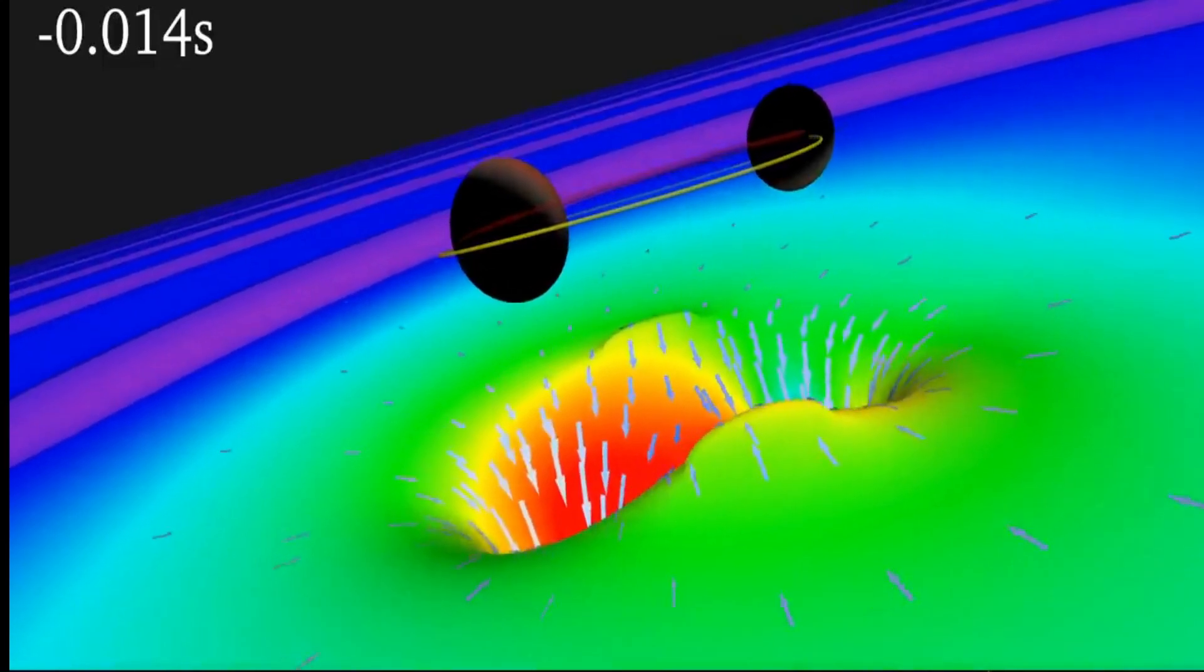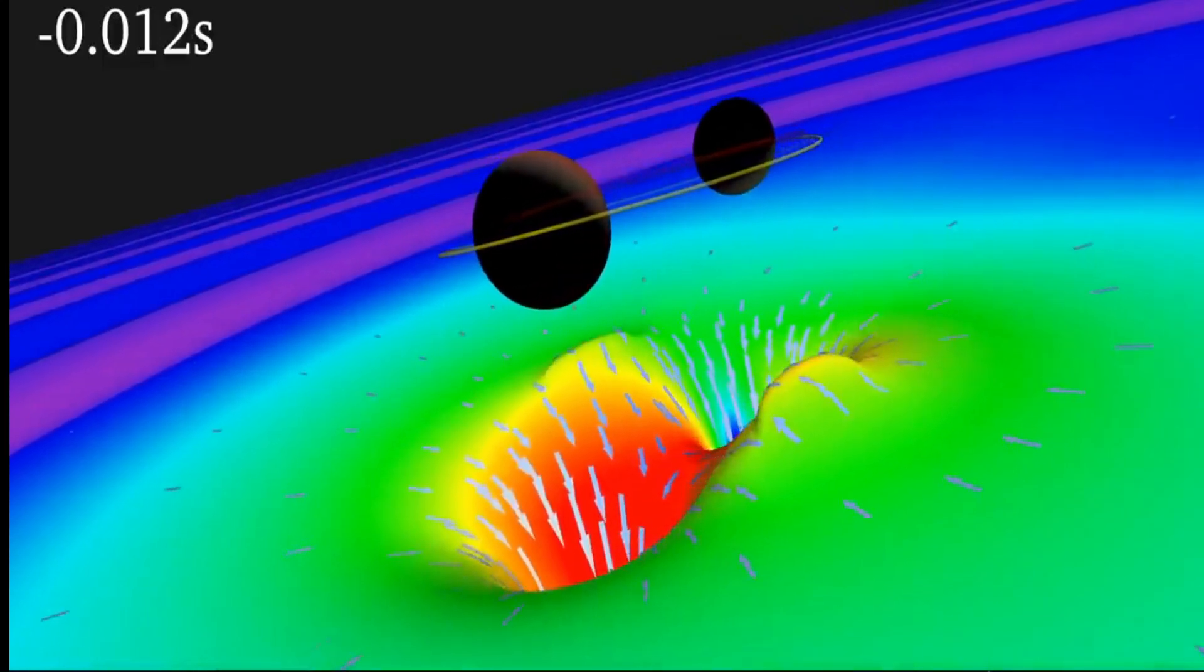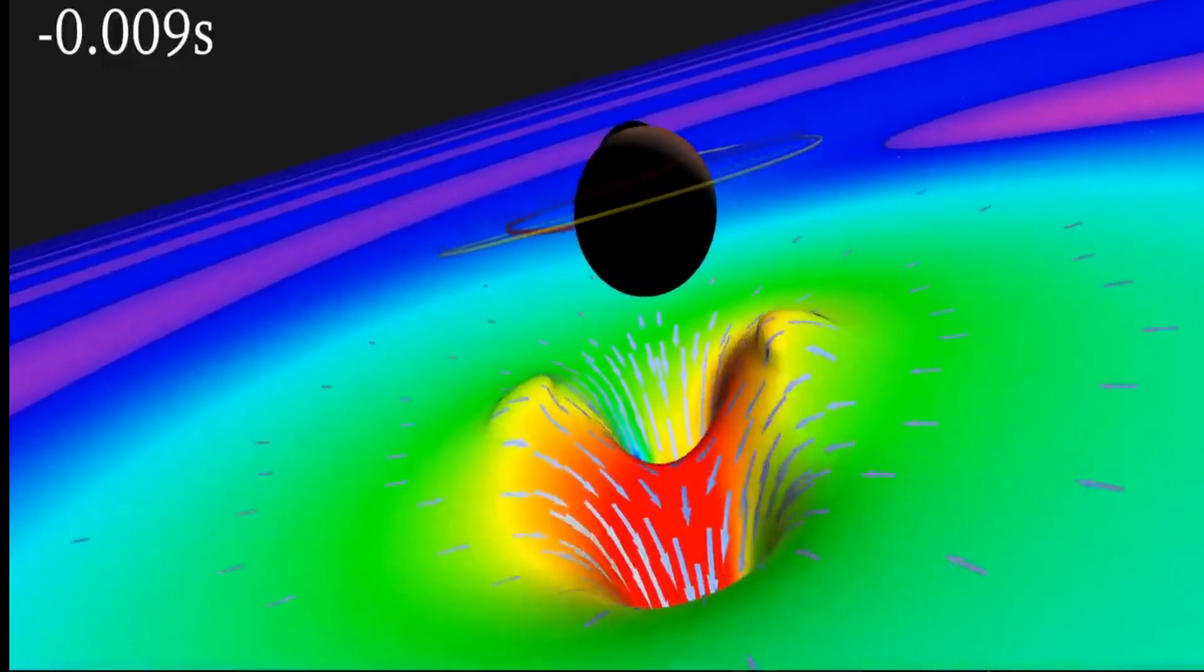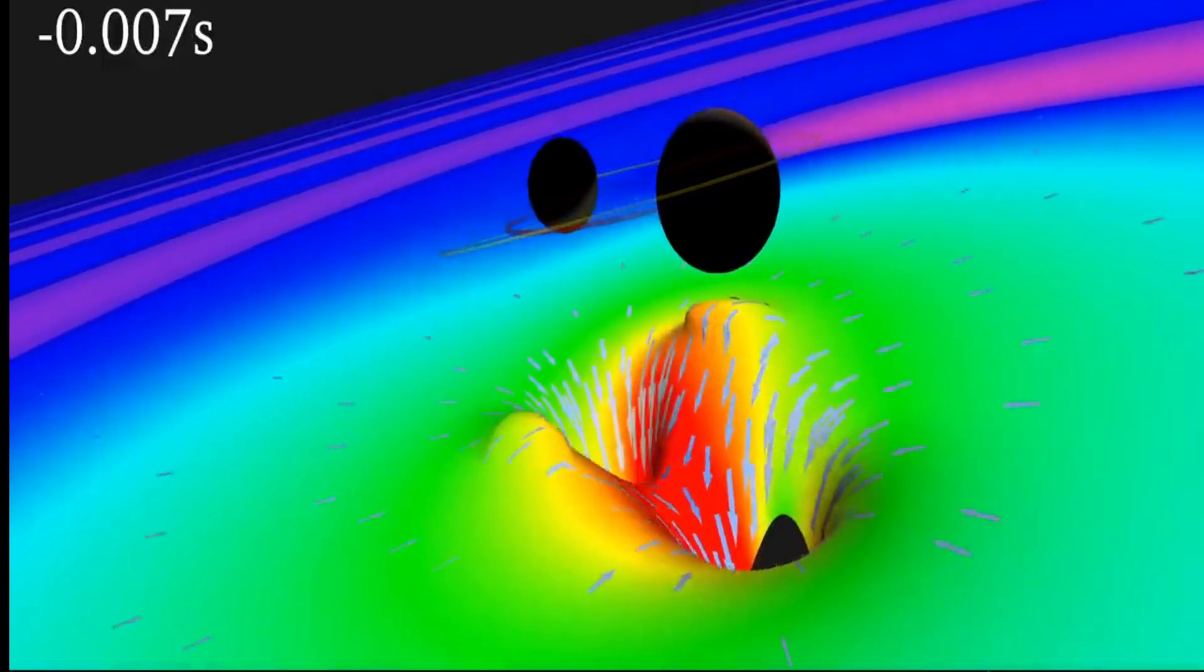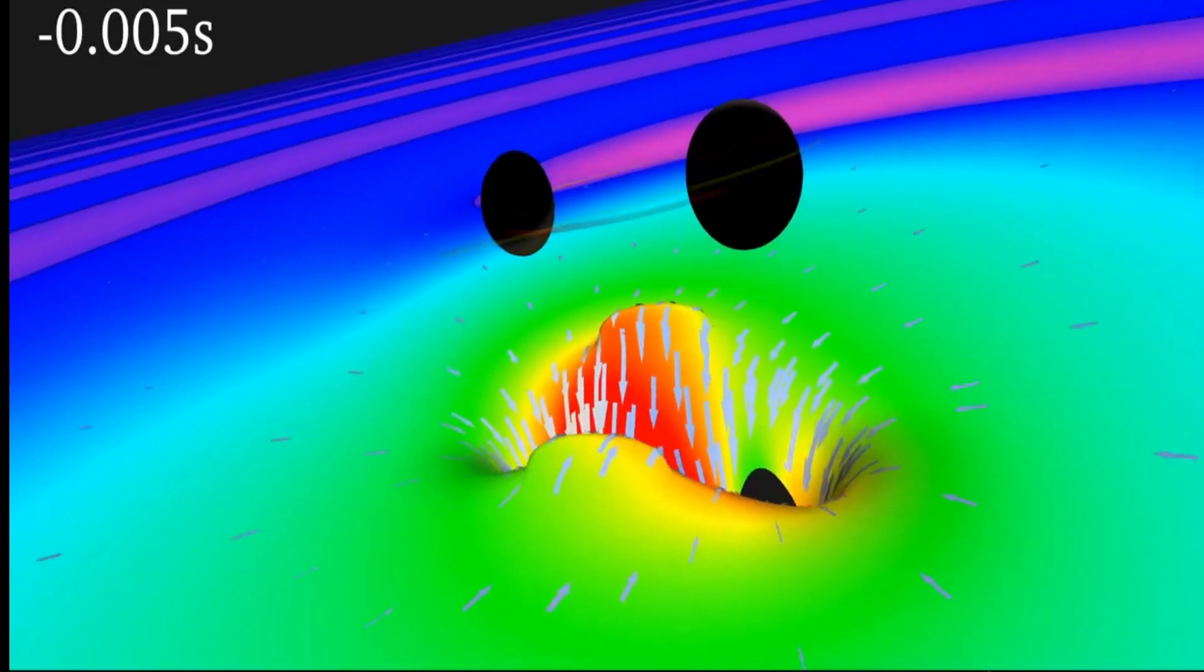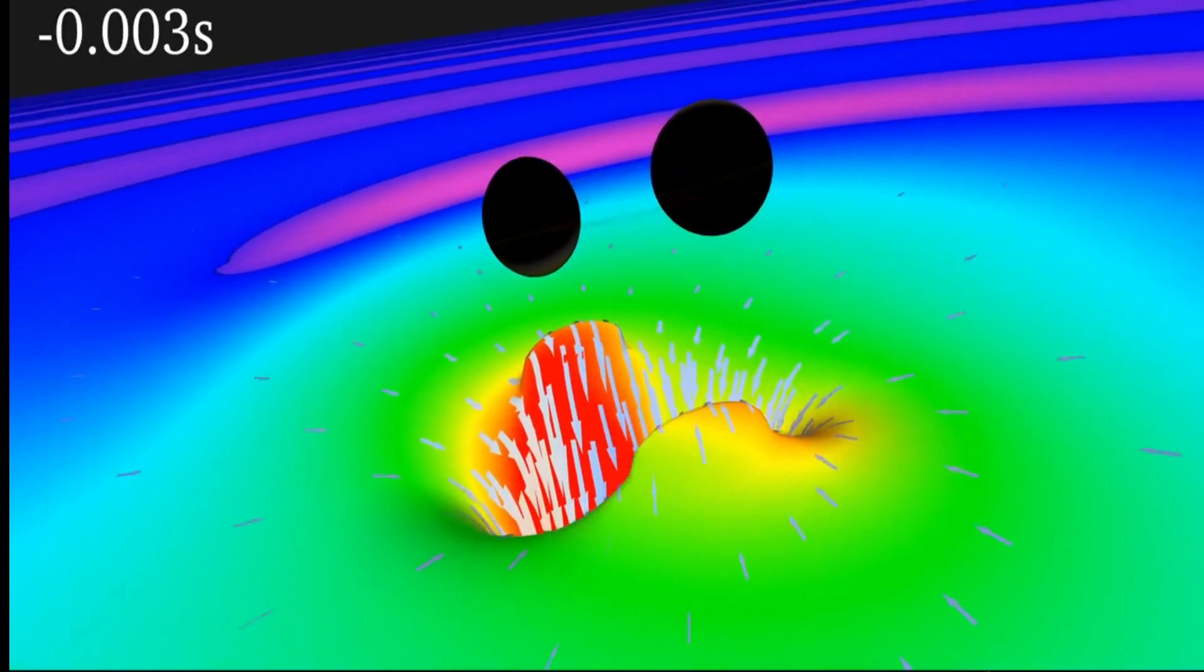At the moment the black hole's surfaces touch, space is enormously distorted. The shapes of space and time oscillate briefly but wildly, and then settle down into the quiescent state of a merged black hole.